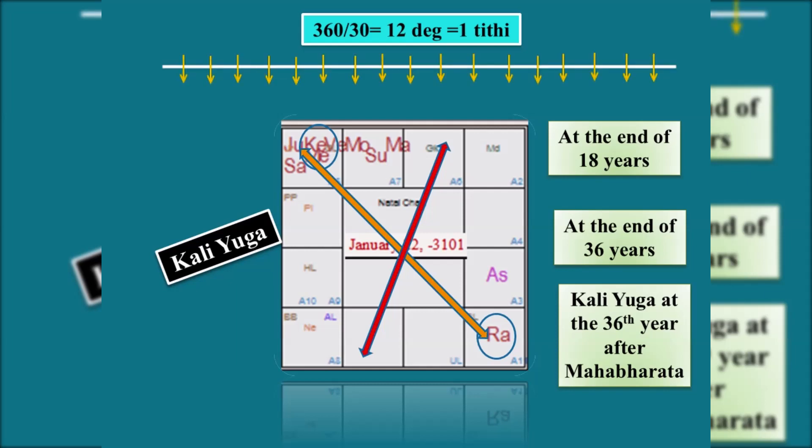Now explaining this, I am showing here the tithi division. Each segment is a tithi and the Amavasya had occurred on the 15th day. Soon after Amavasya was over, the next tithi starts. That 12 degree duration of Pratama starts.